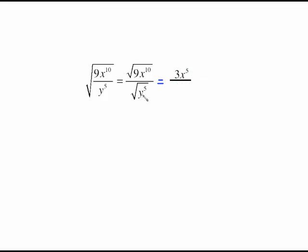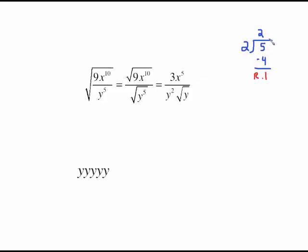Now the y to the fifth we're going to do the same kind of division. Two goes into five twice with a remainder of one. So the number of times it went evenly becomes the power on the outside and your remainder of one becomes the power on the inside.